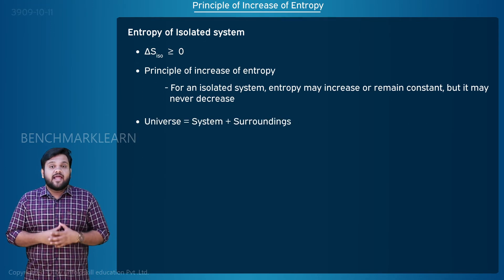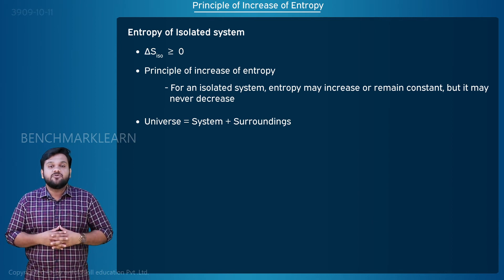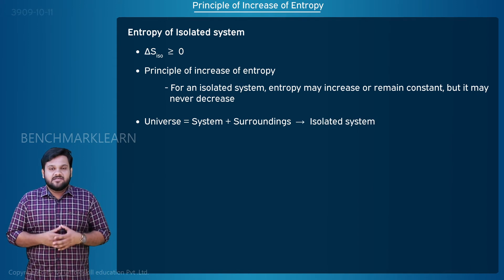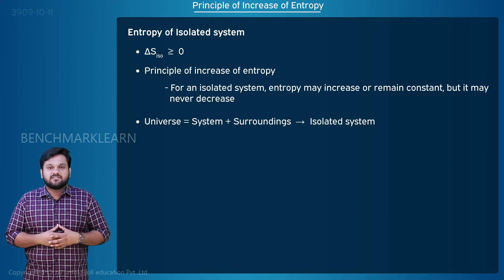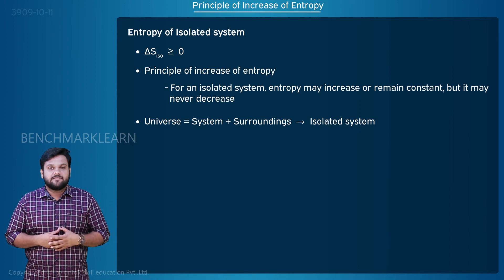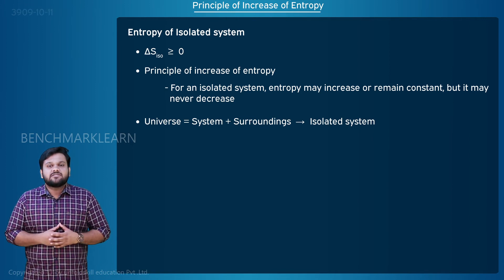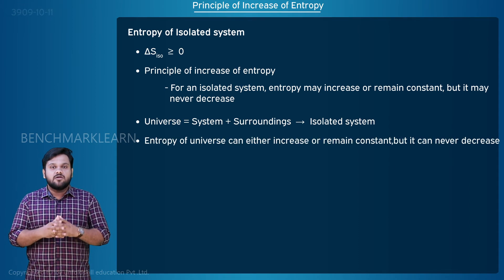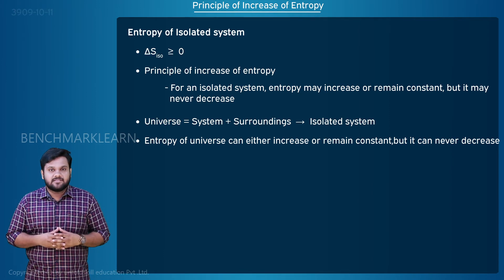We know that a system and its surroundings can be combined and called the universe. The universe can be considered to be an isolated system, since the universe does not interact with anything outside it. According to the increase of entropy principle, the entropy of the universe can either increase or remain constant, but it can never decrease.